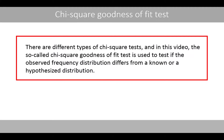There are different types of chi-square tests, and in this video the chi-square goodness of fit test is used to test if the observed frequency distribution differs from a known or a hypothesized distribution.